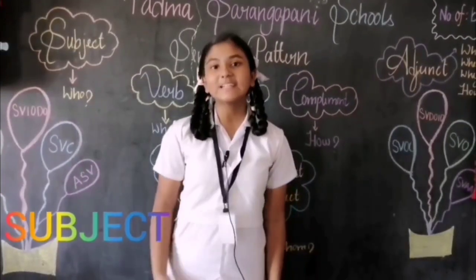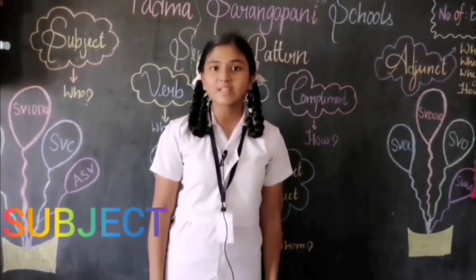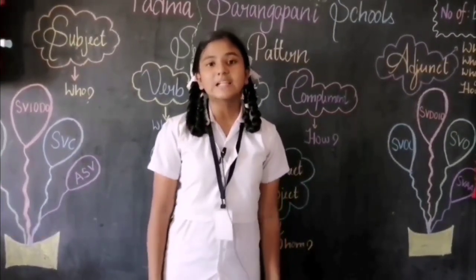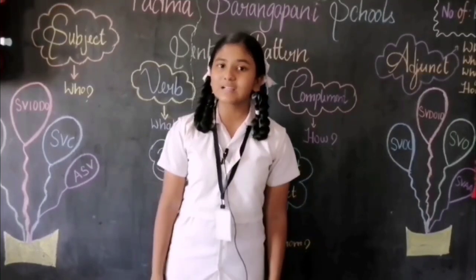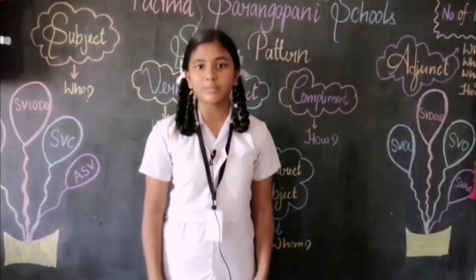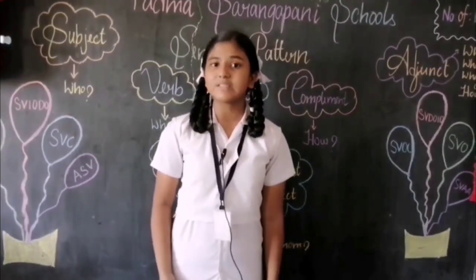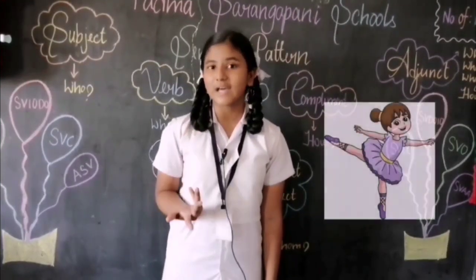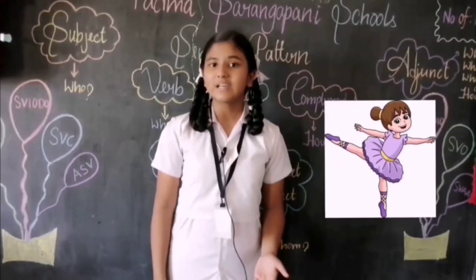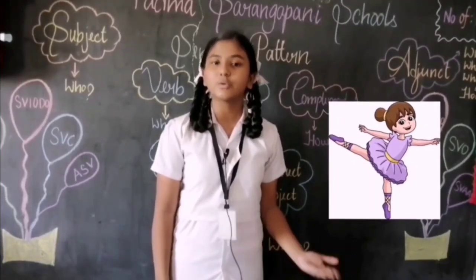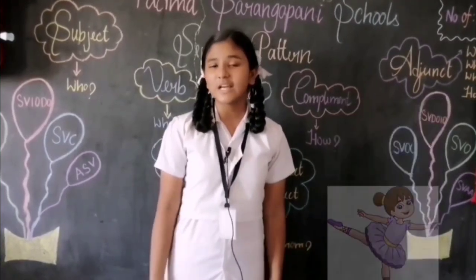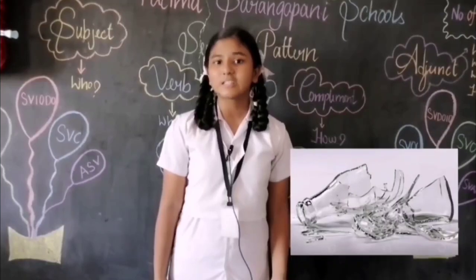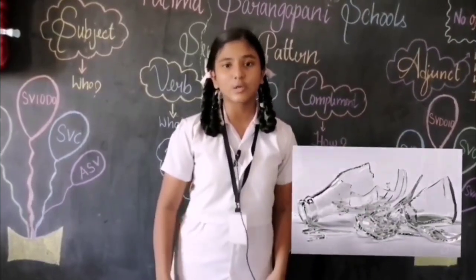Subject: to get a subject, ask the question WHO before a verb. It consists of nouns and pronouns and occurs before a verb. Example: Nancy danced well. Who danced well? Here, Nancy answers the question WHO. The child broke the glass — here, the child answers the question.